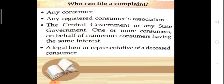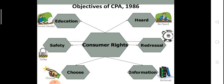There are six rights of a consumer. Number one is the right to information — all consumers have the right to get information about a product. Second is the right to choose — a consumer has the full right to choose anything they want or need. Third is the right to safety — a consumer has the right to a safe product, such as an electronic product with an ISI mark.